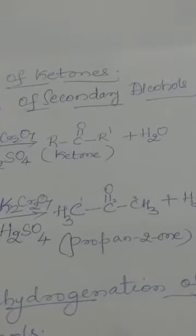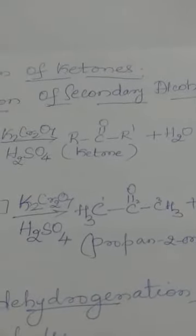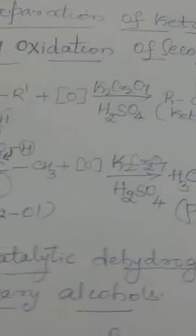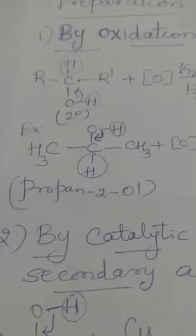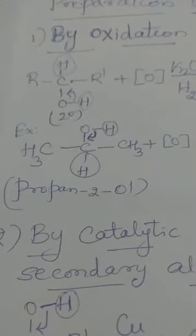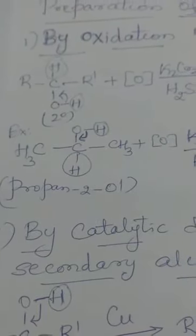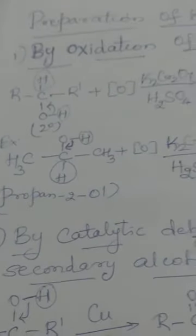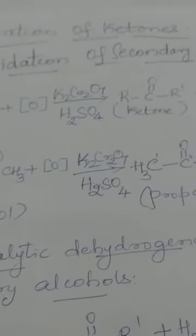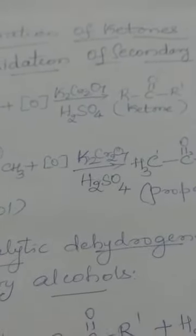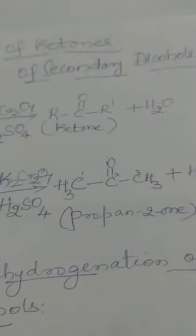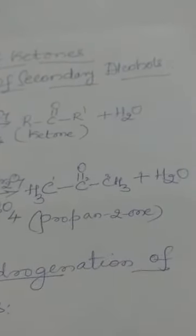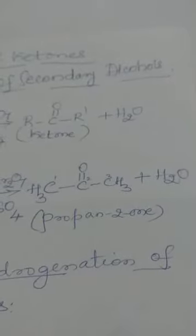This is the first method of preparation by oxidation of secondary alcohols. Taking one particular example, propan-2-ol (CH3CHOHCH3), on oxidation with acidified potassium dichromate, the ketone obtained will be propan-2-one, or acetone, with the elimination of water.